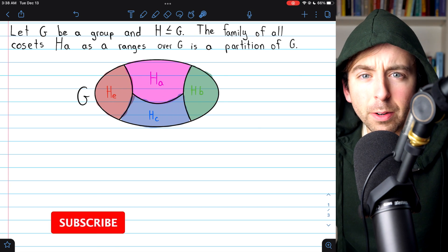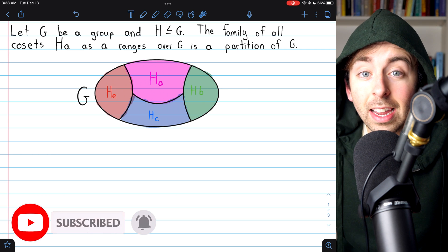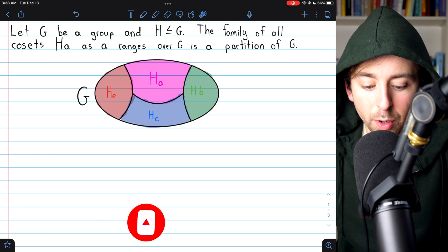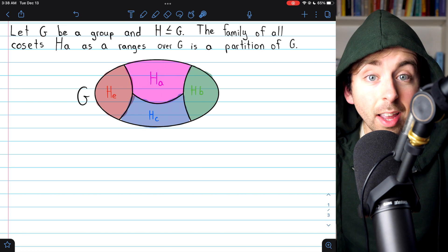It's time to prove our first big result about cosets, and for how nice a result this is, it's surprisingly easy to prove. Let G be a group, and H a subgroup of G.